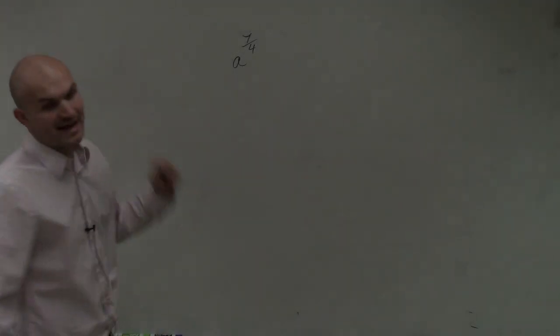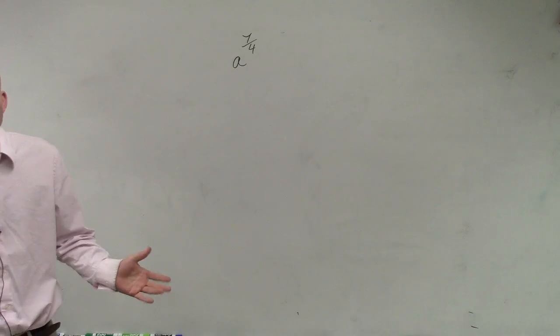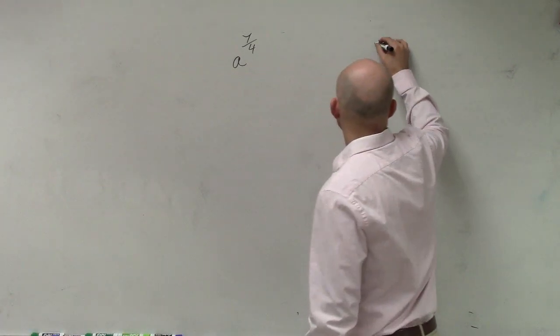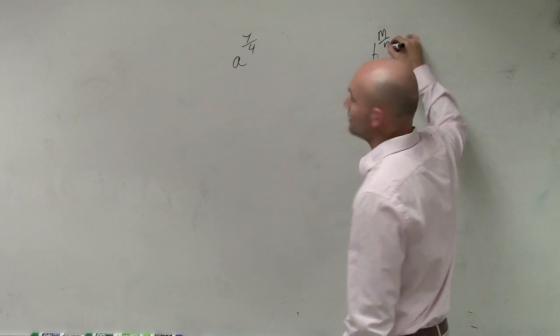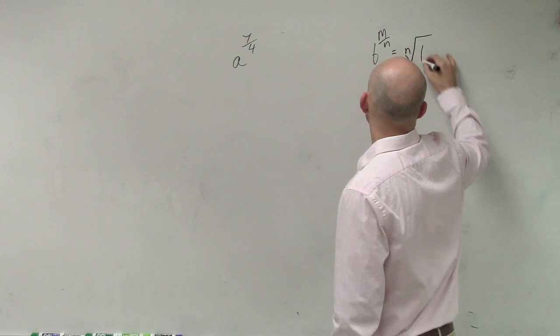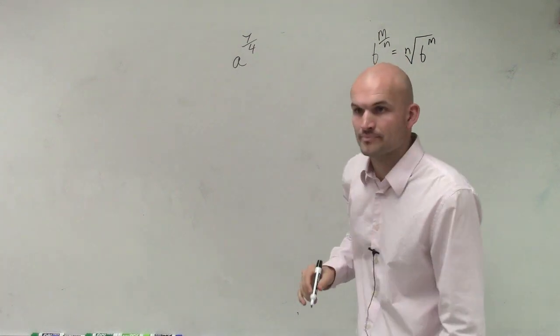Let's go back to A. So now we have A to the 7th fourth. So we're dealing with two different terms in the numerator and denominator. We have to go back to this rule of B to the M over N, which we wrote down in our notes, and that just equals the nth root of B to the M.